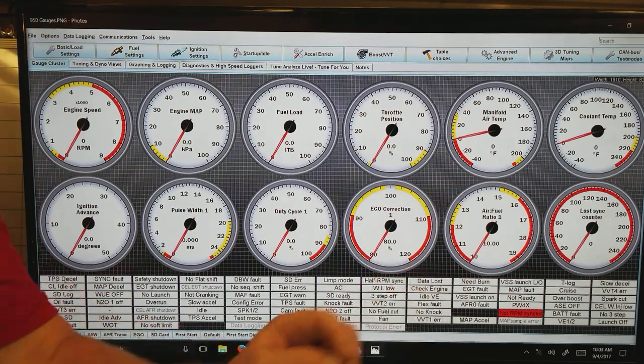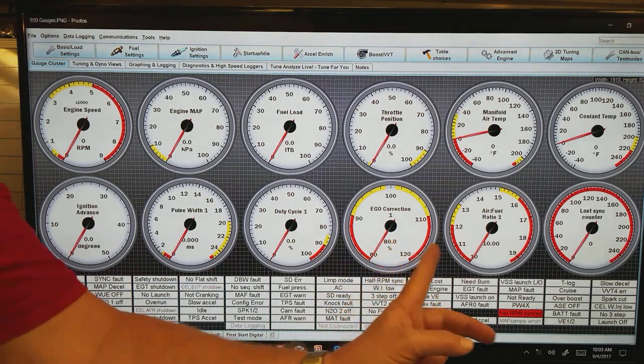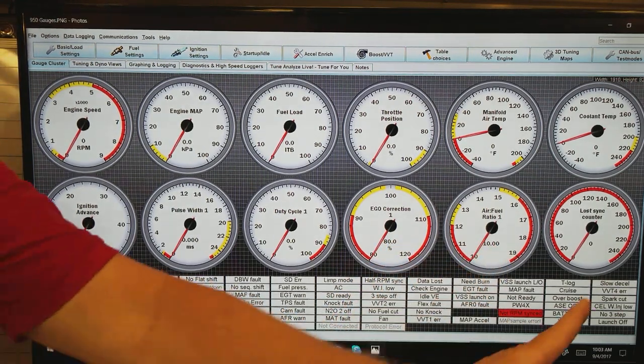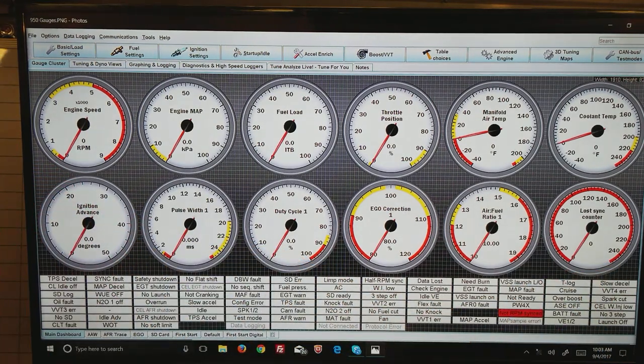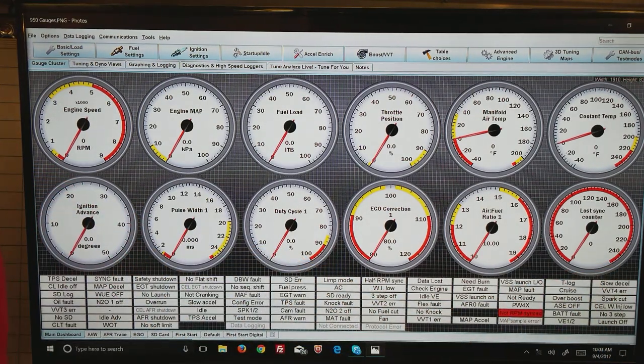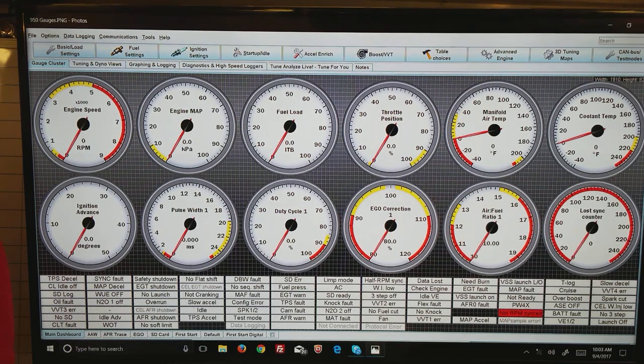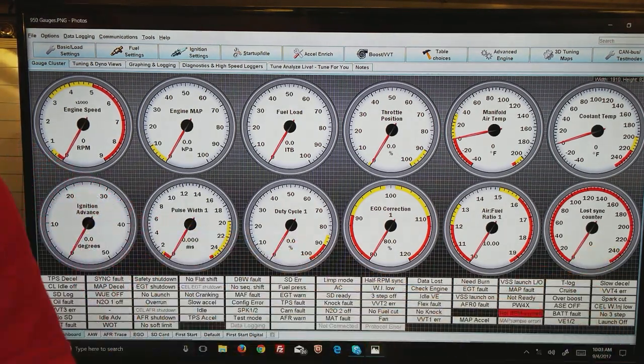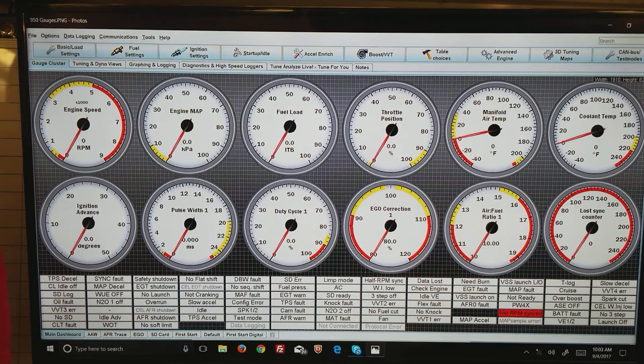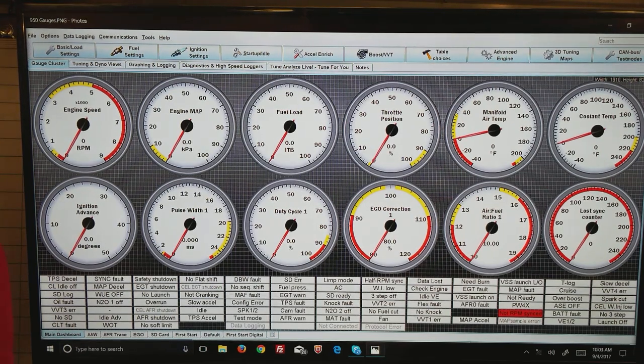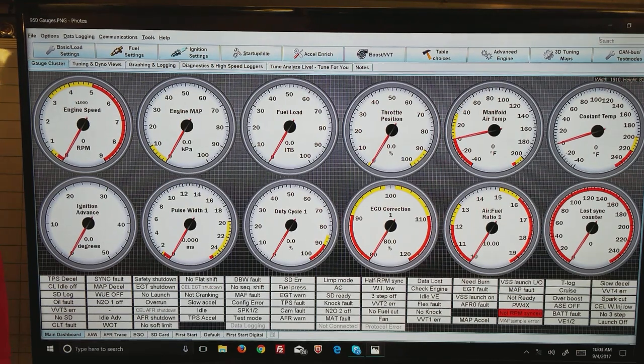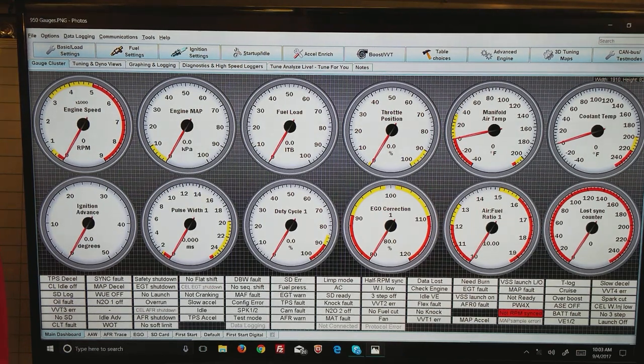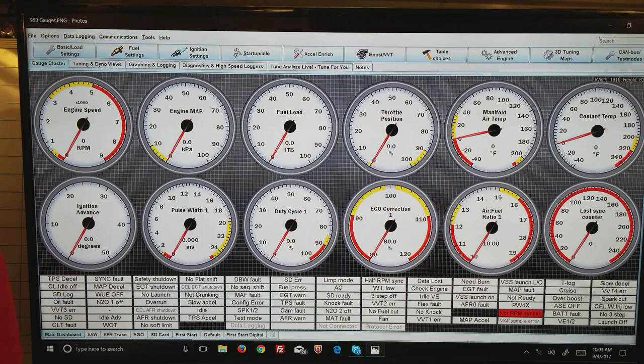The EGO correction, or the correction that is being made because of what the ECU saw coming down the exhaust system—if it's lean it will add fuel, if it's rich it will pull fuel away. The air-fuel ratio, and the lost sync counter. What the lost sync counter is: if in any time in the 720 degrees of rotation the ECU has lost sync with the cam sensor and gets confused, it stops sending sparks, stops sending fuel, and registers a lost sync count. On a motor that everything's working well, that should always stay at zero, or at least any time the motor is running. You might get one or two lost sync errors as you first start cranking, but you cannot have them while the motor is running.